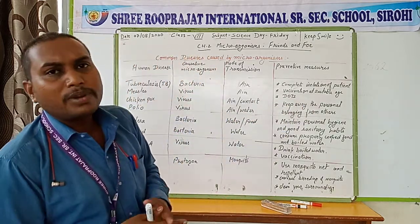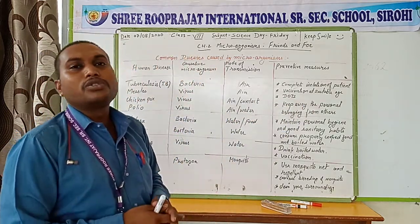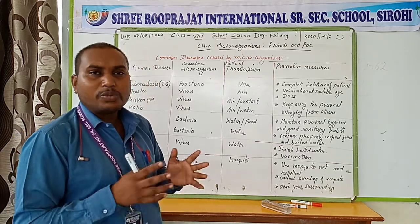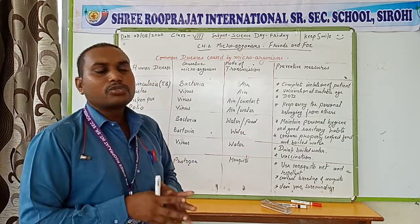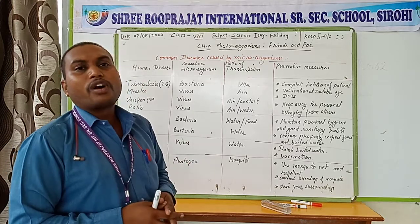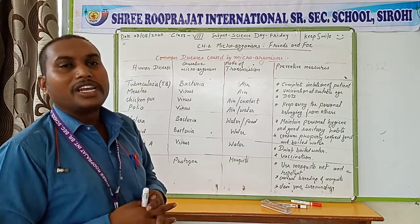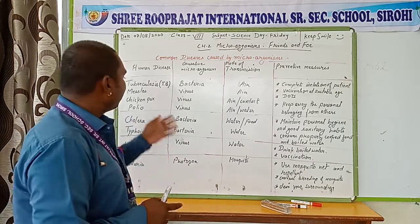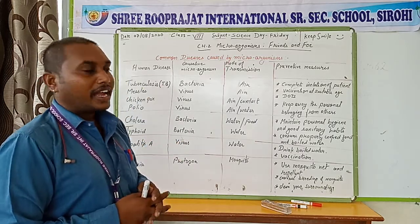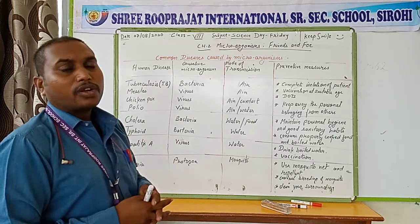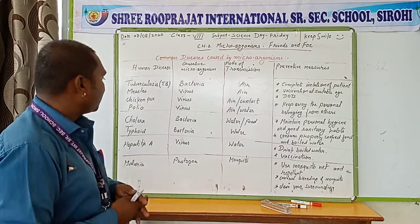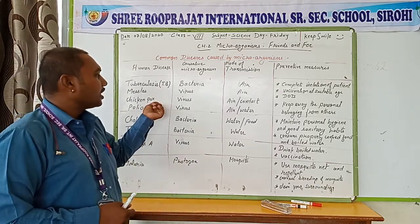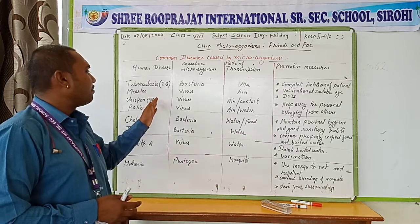Another preventive measure is to keep personal belongings away from others. Personal belongings are the things used by the infected person, and these should be kept away from other persons or family members so that they do not come in contact with the virus or bacteria, protecting them from these diseases.